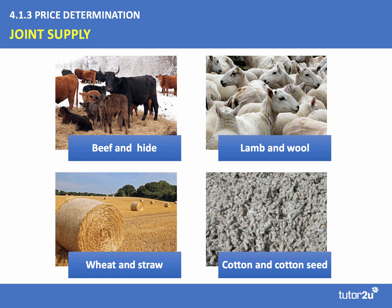A contraction in the market supply of lamb will reduce the supply of wool. Wheat and straw are other good examples, as are cotton and cotton seed. So joint supply is all about the byproduct effect — an increase or decrease in the supply of one good leads to an increase or decrease in the supply of a byproduct.